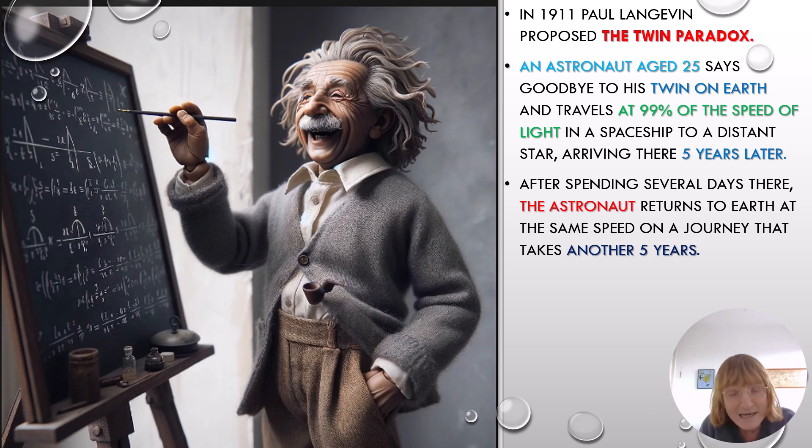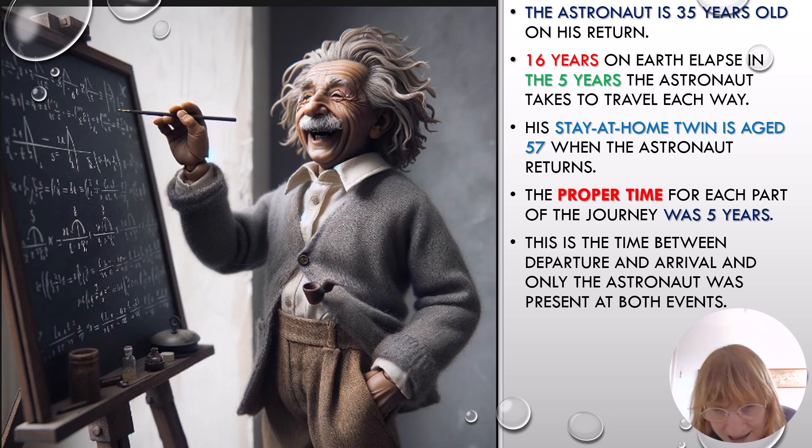In 1911, Paul Langevin proposed the twin paradox. An astronaut, aged 25, says goodbye to his twin on Earth and travels at 99% of the speed of light in a spaceship to a distant star, arriving there five years later. After spending several days there, the astronaut returns to Earth at the same speed on a journey that takes another five years. The astronaut is 35 years old on his return. 16 years on Earth elapse in the five years the astronaut takes to travel each way. His stay-at-home twin is age 57 when the astronaut returns.